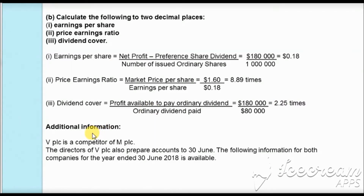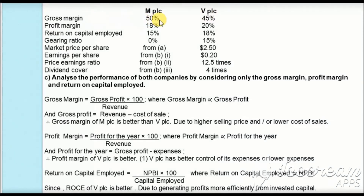Additional information is provided: VPLC is a competitor of MPLC, and both companies prepared accounts to 30th June 2018. For MPLC and VPLC respectively: gross margin is 50% and 45%; profit margin is 18% and 30%; return on capital employed is 15% and 18%; gearing is 0% and 15%; earnings per share is 18 cents and 20 cents; price-earnings ratio is 8.89 times and 12.5 times; and dividend cover is 2.25 times and 4 times.